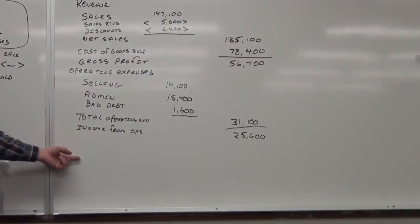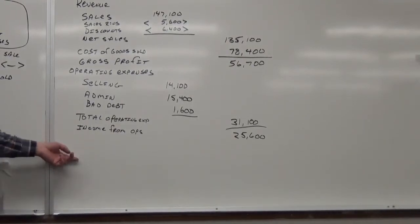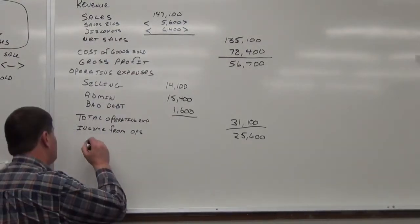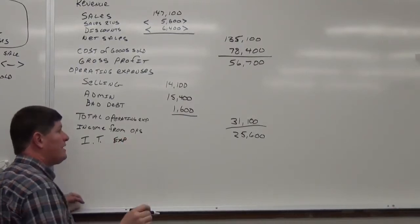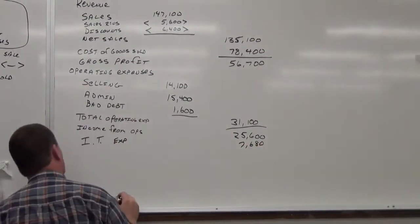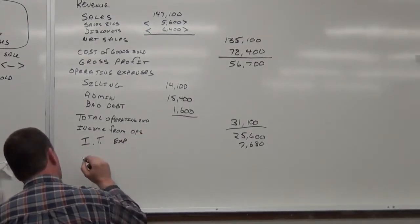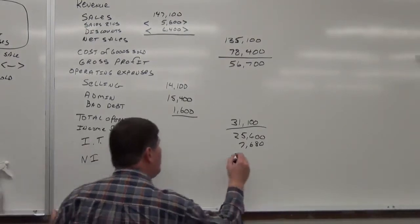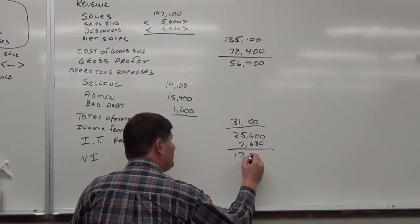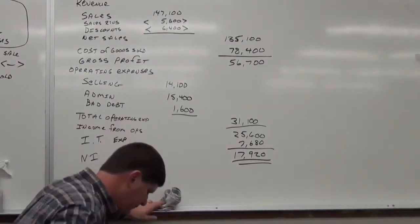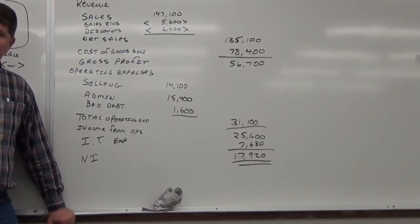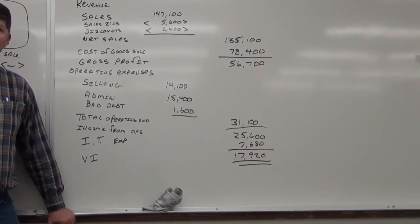Total operating expenses are how much? $31,100. $1,100. Okay. Total operating expenses. Gross profit minus total operating expenses gives me? Income from operations. What? Operating profit. Income from operations. So, help me out here. That's $25,600. Okay. Income from operations. Then we would have what after that? Other income and expense.